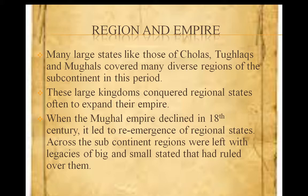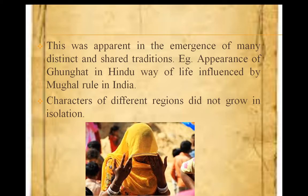These empires had no fixed boundaries. The emperor always wanted to increase the boundaries of his empire for expansion. The period of 1000 years that we are learning had many such regional kingdoms and empires — like the Cholas, the Tughlaqs, and the Mughals. These all occupied diverse regions under their empire and made it bigger. Larger kingdoms conquered regional states often to expand their empire.